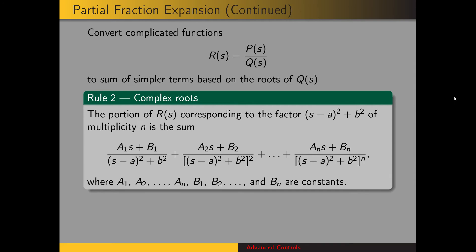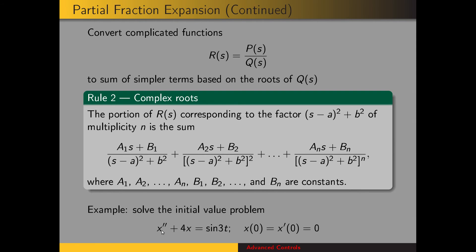That was for real roots. Partial fraction expansion can also be used when you have complex roots in the denominator. Those factors can be expressed as (s−a)² + b². We can have multiple roots at the same location, in which case we'll have multiple quotients with the same root raised to different powers. When we have complex roots, the numerator will have the form a_i·s + b_i. Let's look at an example: x'' + 4x = sin(3t), with zero initial conditions, so taking the Laplace transform will be simpler.